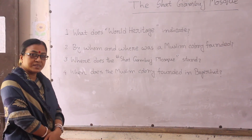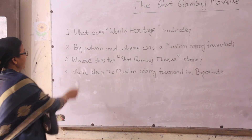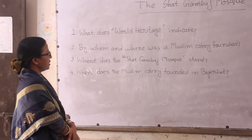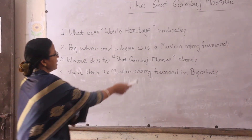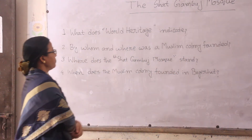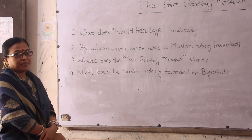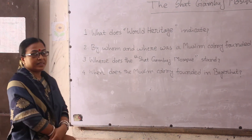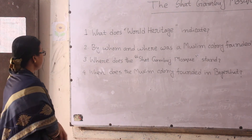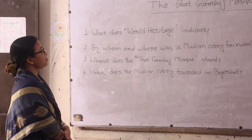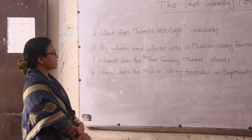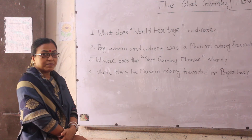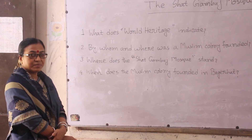Do you agree with me? Second question: By whom and where was a Muslim colony founded? A Muslim colony was founded by Khan Jahan Ali in Bagerhat. Our next question: Where does the Shatgombus Mosque stand? The Shatgombus Mosque stands at the outskirts of Bagerhat town. Do you agree with me? Thank you.